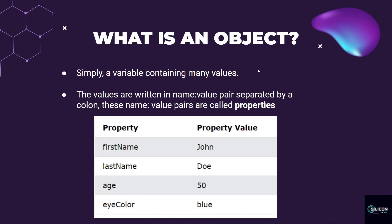Simply put, an object is a variable containing many values. In JavaScript, we have objects. What is an object and what does it mean? Name and value pairs are separated by a colon. These name and value pairs are called properties.